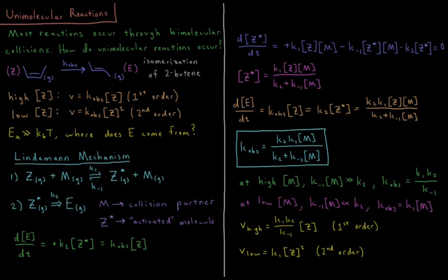This video will discuss the mechanism of unimolecular reactions in chemical kinetics. Most reactions occur through the collisions of two molecules, or what are called bimolecular collisions. The question here is how do unimolecular reactions occur?